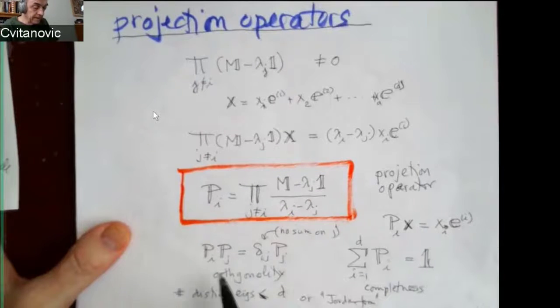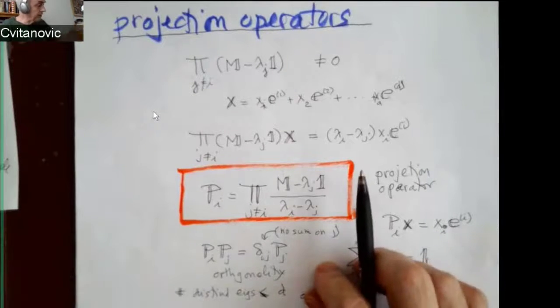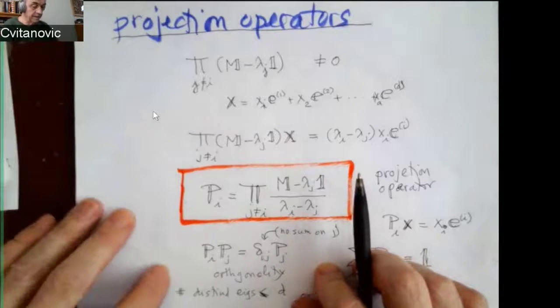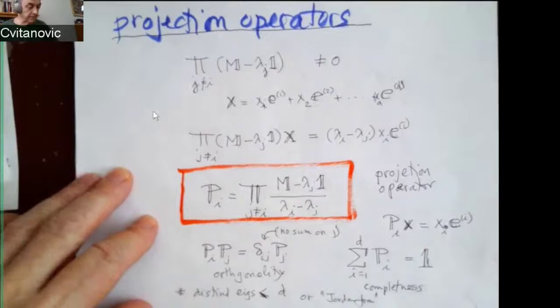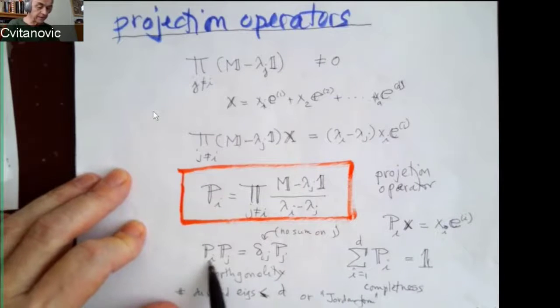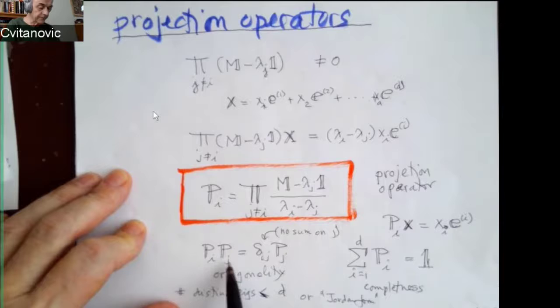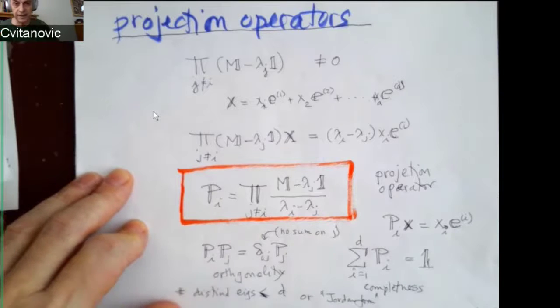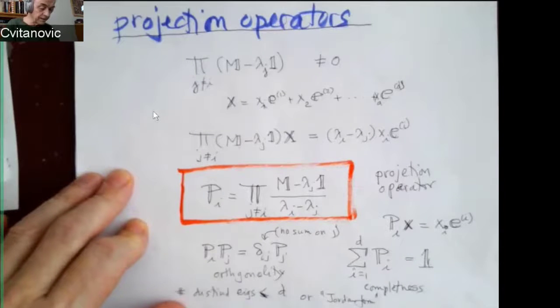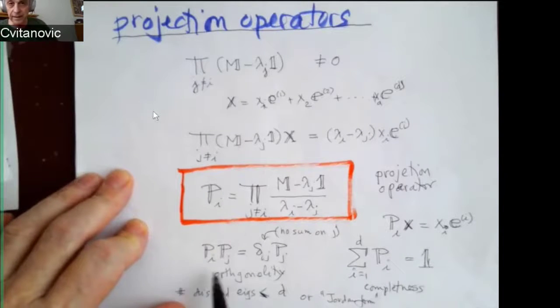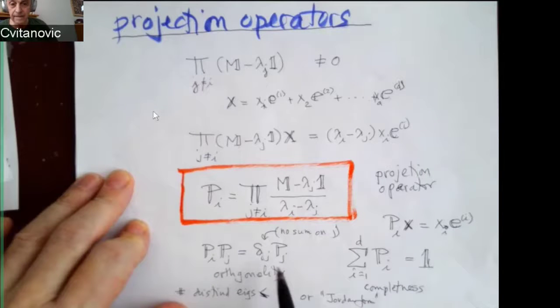One is that once you've used projection operator, there's no point of doing it again because you're already in a subspace. So if you apply it twice, P_I equals P_I squared, you just get the projection again. That's called orthogonality. The different spaces are zero. You understand the orthogonality, correct? Mm-hmm. Good.